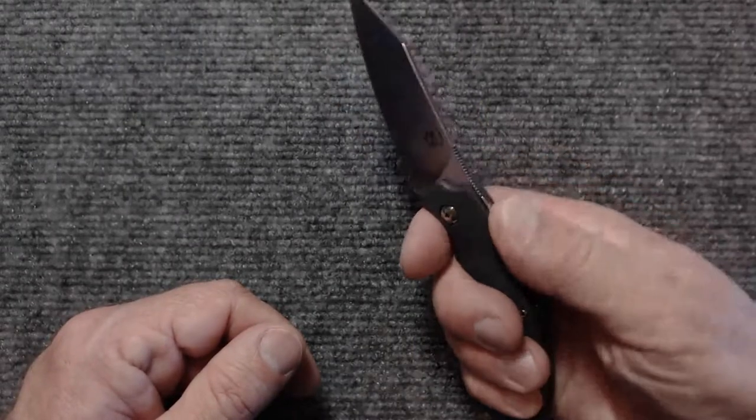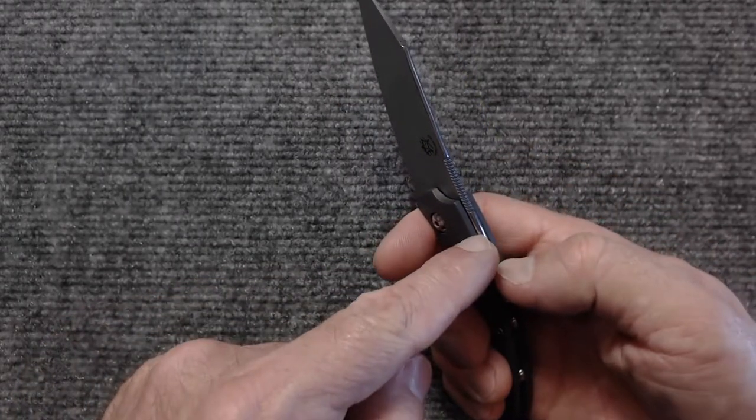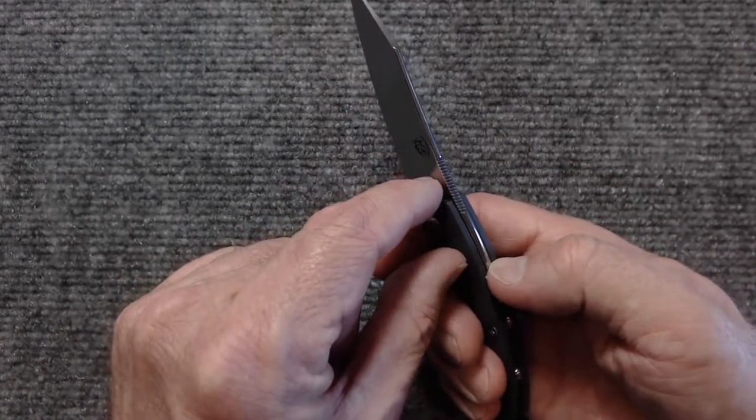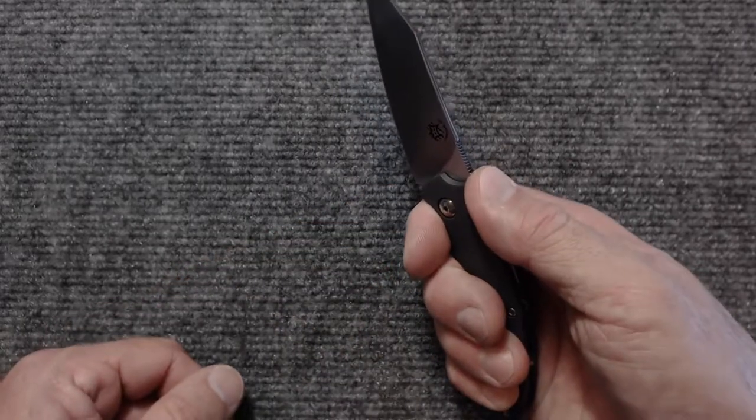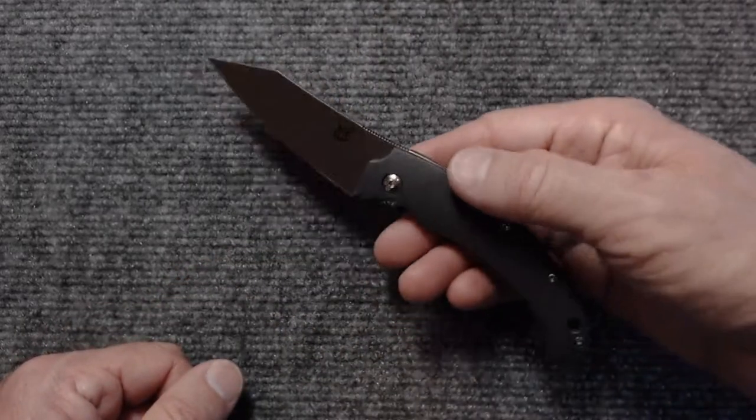So I guess if you're cutting it's fine, but I would say that maybe the jimping should have come back a little further, be positioned a little further back, just to encourage you to keep your thumb back behind the pivot, just as a safety thing.